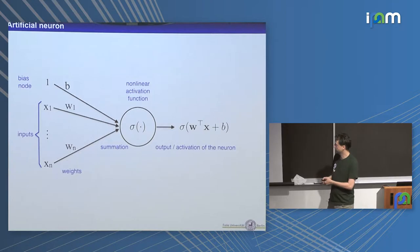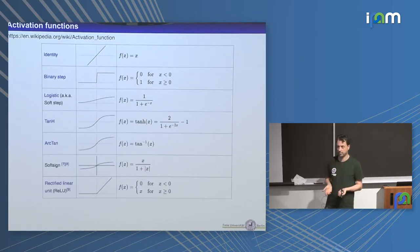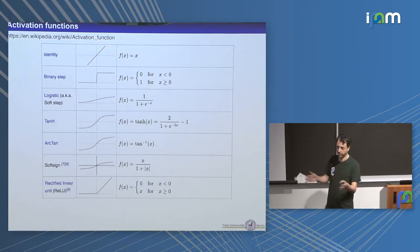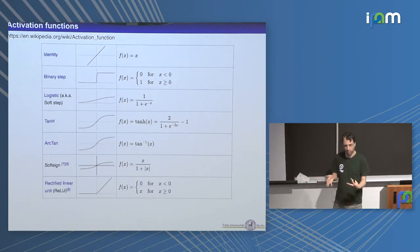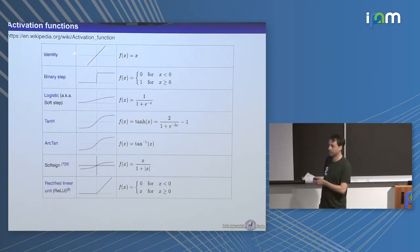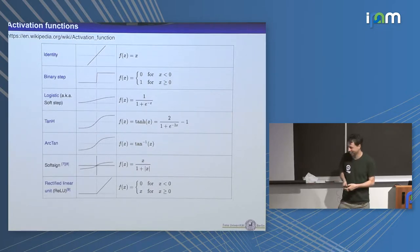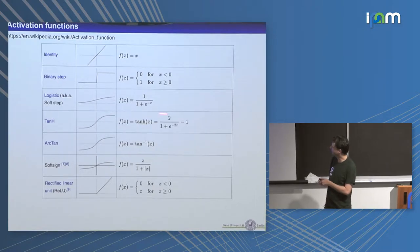There are different options for activation functions. One choice is simply the identity — doing nothing — which is sometimes useful at the output if you want to cover the full range of real numbers. However, using only identity activations only makes sense once in the network; if you stack multiple identity activations with otherwise linear operations, you're just concatenating linear operations, so one layer is sufficient.